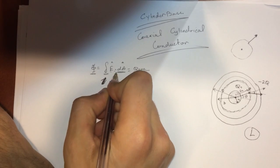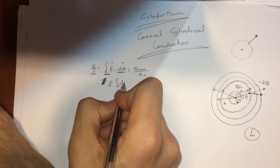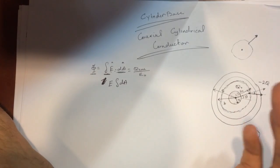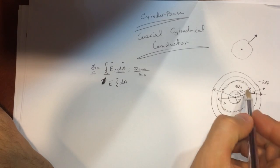So E, and then when you take the integral of the dA, dA is just the surface of this cylindrical, this cylinder that we made, the Gaussian surface.